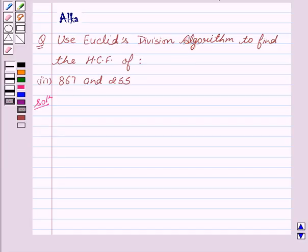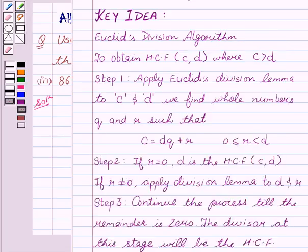Let me tell you the basic concept that is Euclid's division algorithm, which is to obtain HCF of C and D where C is greater than D. Step 1: Apply Euclid's division lemma. On dividing C by D, we get Q as the quotient and R as the remainder, where R is always greater than or equal to 0 but should always be less than D.